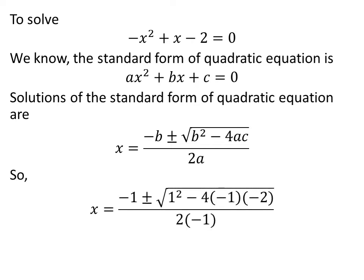So, application of the above fact gives us solutions of the quadratic equation minus square of x plus x minus 2 is equal to 0 are minus 1 plus or minus square root of square of 1 minus 4 times minus 1 times minus 2 upon 2 times minus 1.